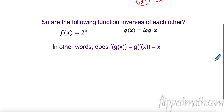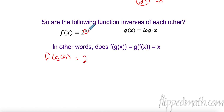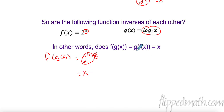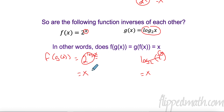Are these two functions inverses of each other? Let's do f of g of x: I put g of x in, so I have two to the log base two of x — that all cancels and I'm left with x. Then g of f of x: log base two of two to the x — the bases are the same, they undo each other, and I'm left with x. Since f of g of x equals x and g of f of x equals x, yes, they are truly inverses.